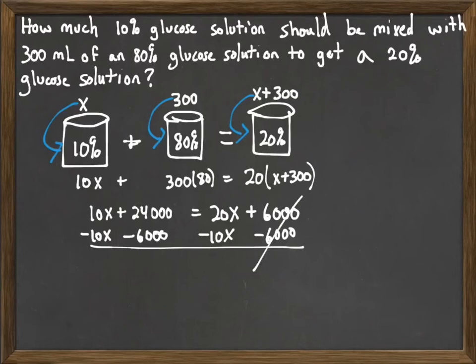And so, simplifying here, the 10X's are gone. We'll have 24,000 minus 6,000, which will leave us with 18,000. 20 minus 10X, which will leave us with 10X.